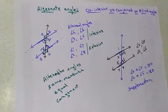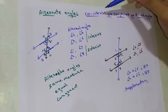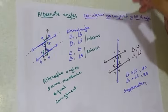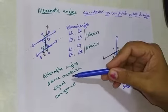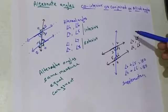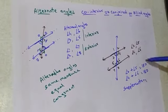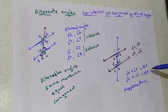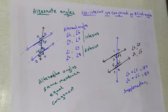So here we have discussed the alternate angles and the co-interior angles. Alternate angles have the same measure, and the co-interior angles sum up to 180 — that is, they are supplementary angles.